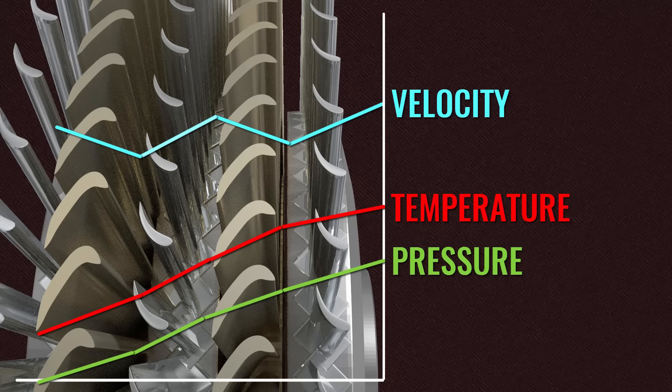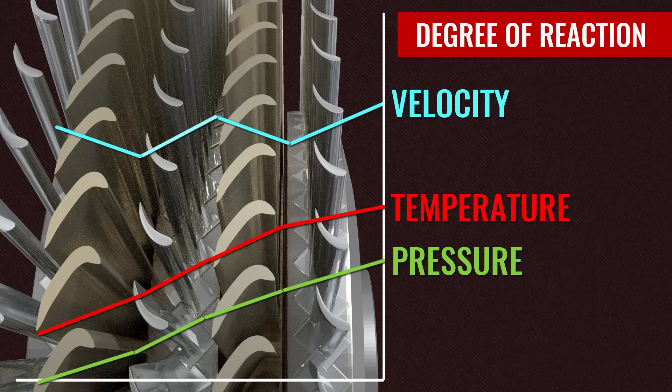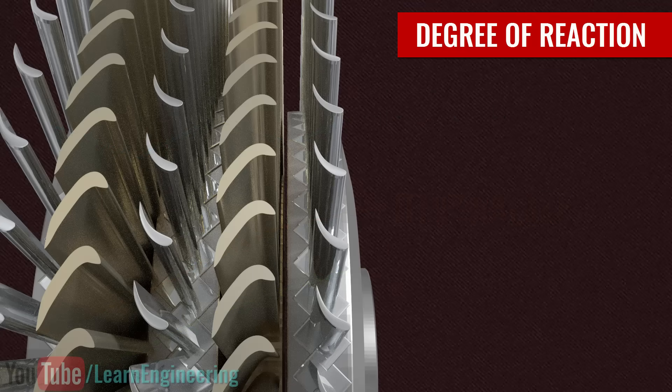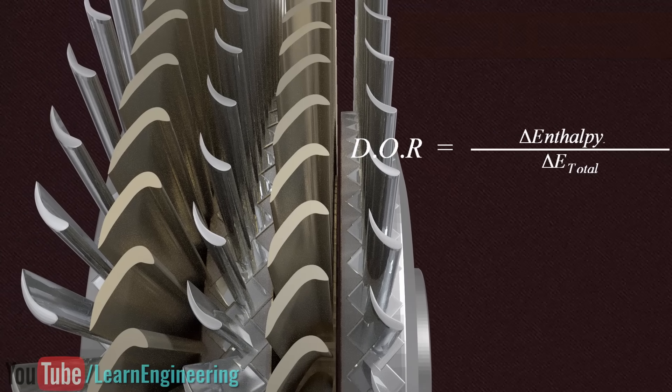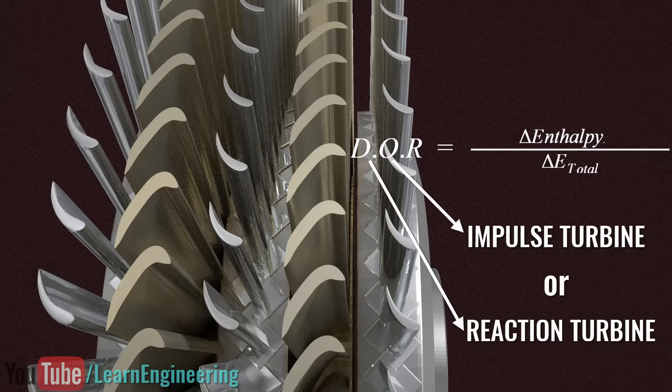There is an important term while designing steam turbines, namely, degree of reaction. This term is calculated by dividing pressure and temperature energy by the total energy change in the rotor. Pressure and temperature energy together is called enthalpy. The degree of reaction decides what type of steam turbine it is.